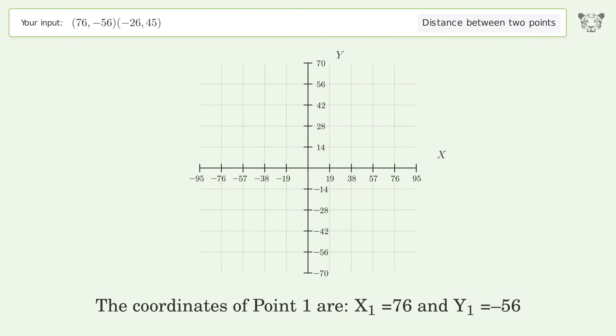The coordinates of point 1 are x1 = 76 and y1 = -56. The coordinates of point 2 are x2 = -26 and y2 = 45.